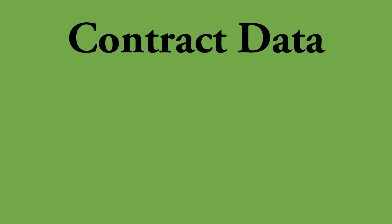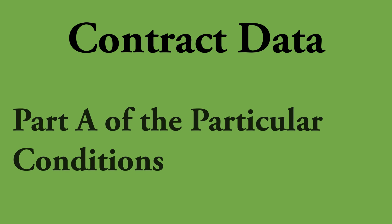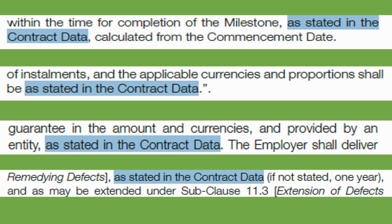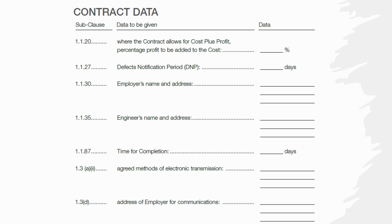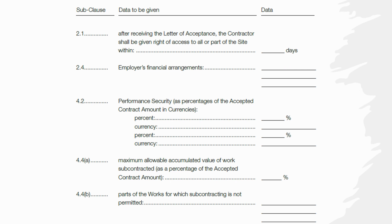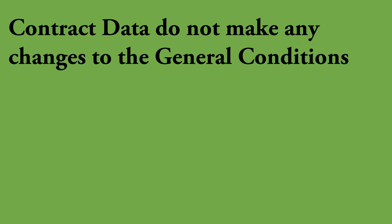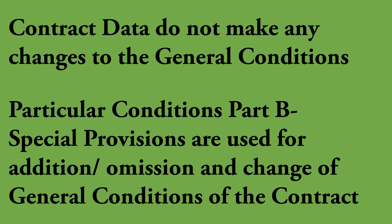Now let's talk about 'contract data'. Contract data is Part A of particular conditions, and it acts as a link between general and particular conditions. When you go through general conditions clauses, you will find references that say 'as stated in the contract data', meaning certain sub-clauses in the general conditions require specific information. You can find all the project-specific information under contract data, such as employer's details, time for completion, advance payment percentage, and retention amount percentage. Remember that contract data does not make any changes to the general conditions in FIDIC. If you want to change any sub-clauses in general conditions, you shall do it using particular conditions Part B, special provisions.